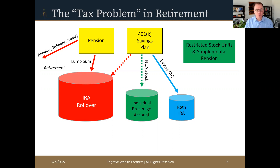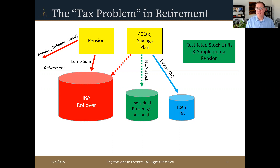There's no reason to roll those after-tax contributions into an IRA when the IRS allows you to move after-tax contributions directly into a Roth IRA. A Roth IRA consists of after-tax contributions only — there is no pre-tax money. So everything in your Roth is either after-tax contributions or earnings, and there are tax benefits to both that you need to know about.